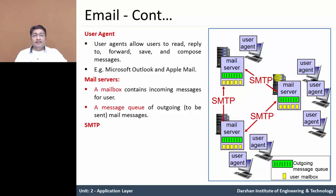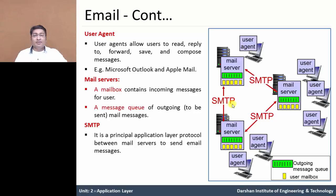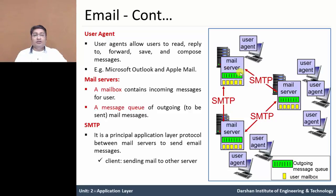Now we will discuss SMTP — Simple Mail Transfer Protocol. It is the principal application layer protocol between two mail servers, used to send and receive email between mail servers. In SMTP, it acts as both a client and a server. If an SMTP mail server is sending mail to another mail server, it acts as a client; when it is receiving mail from another mail server, it acts as a server.